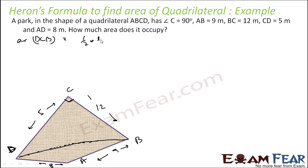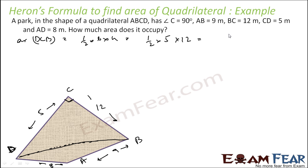Area of triangle DCB is 1/2 times base times height. Base is 5 and height is 12. So 1/2 times 12 times 5 equals 30 meter square.